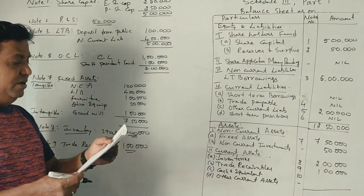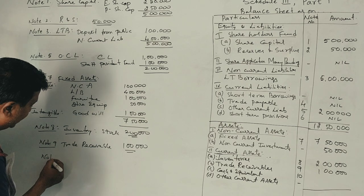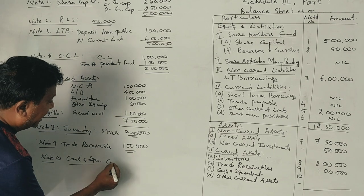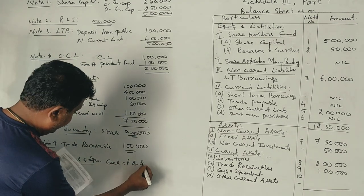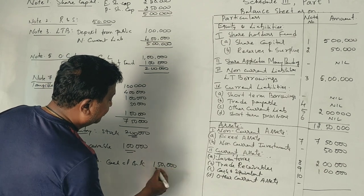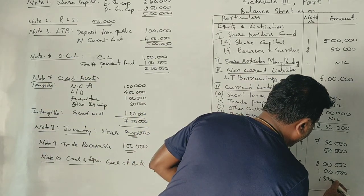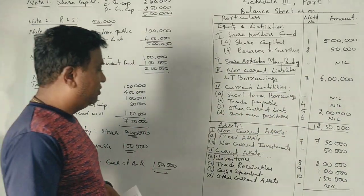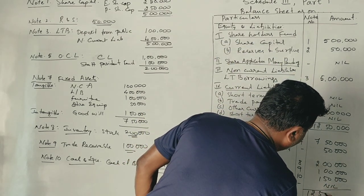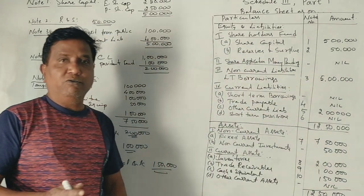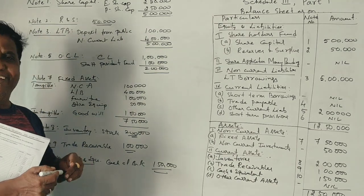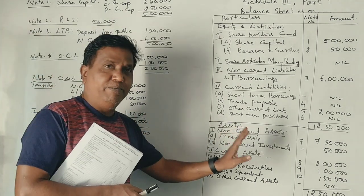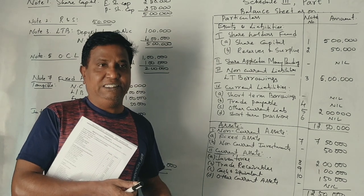Cash and equivalents — note number 10 is cash and bank balance: cash at bank and bill receivable totaling ₹8,50,000. Short-term provisions are also noted. The total comes to ₹1,20,000. That covers all seven marks for this question.